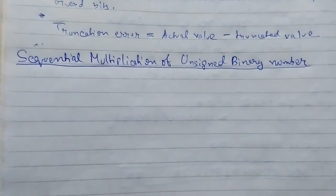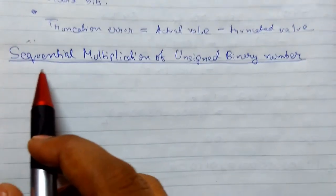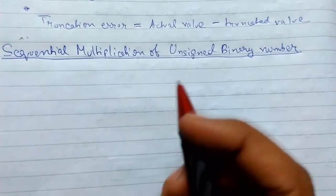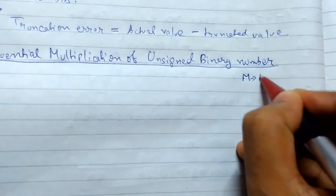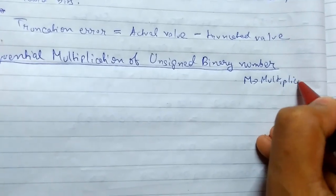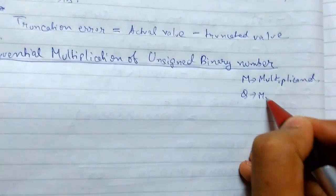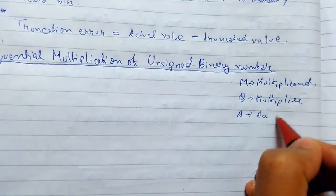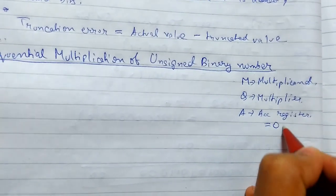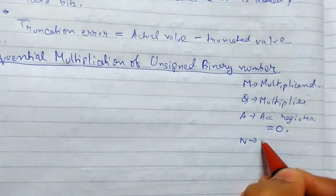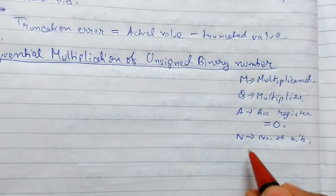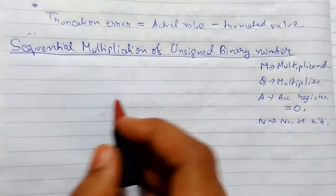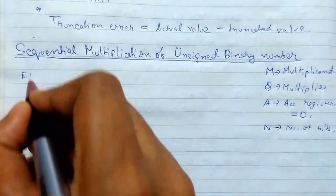Welcome back. Today we will be continuing our tutorial presentation on computer arithmetic, specifically learning about sequential multiplication of unsigned binary numbers. Let us consider: M is the multiplicand, Q is the multiplier, A is the accumulator register initially set to 0, N stores the number of bits, and C stores the end carry bit generated after addition.